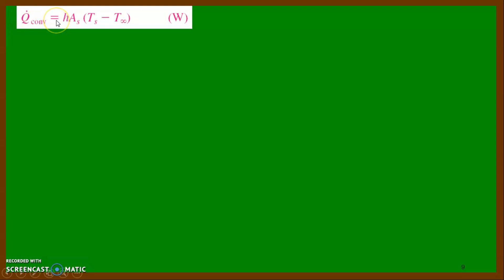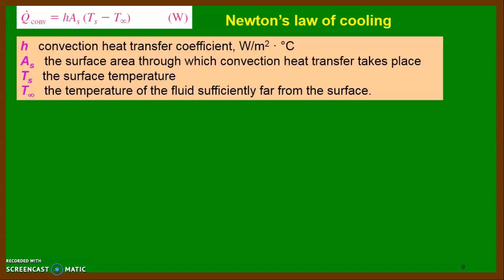The governing law for convection is: Q-dot convection equals H·As·(Ts minus T∞). This law is generally known as Newton's Law of Cooling and is the governing law for the convection mode of heat transfer.